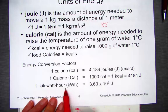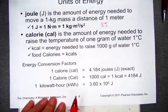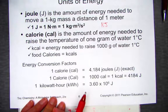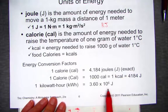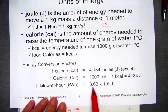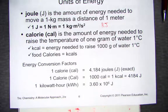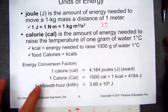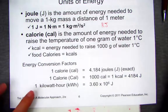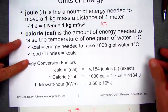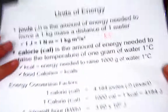A kilowatt-hour, most commonly used from a power source when a power company charges us for the use of electricity, equals 3.6 times 10 to the 6 joules of energy. These conversions would be handy to have as you're tackling some homework where they'll ask you to convert from one unit to the other, so keep this slide handy.